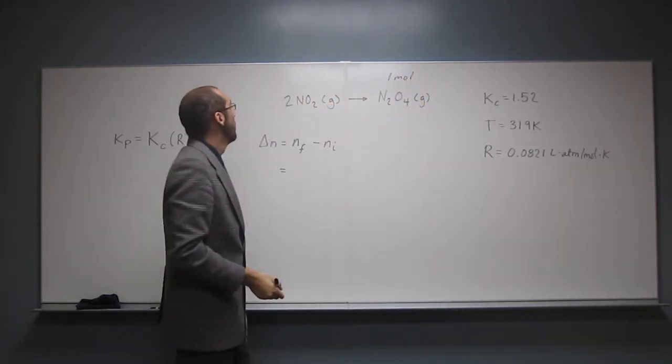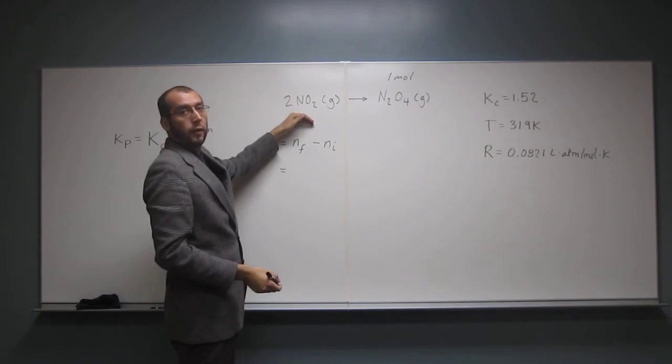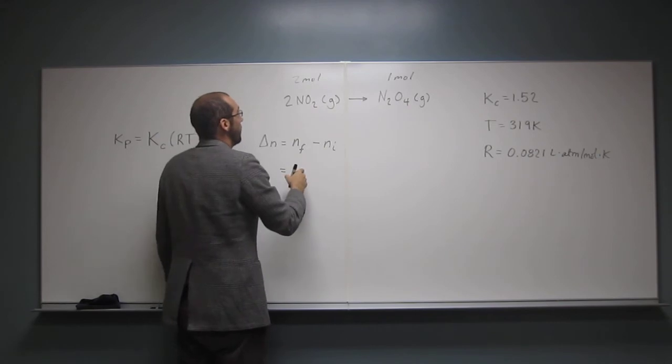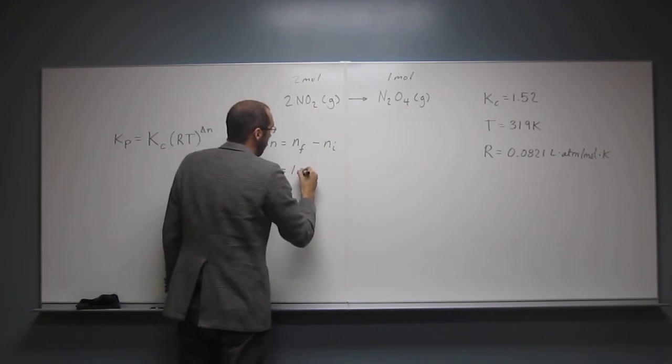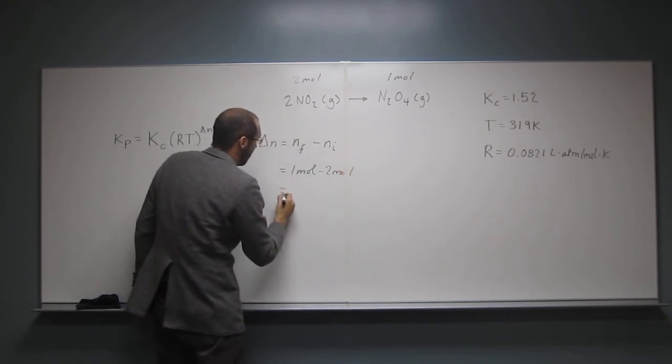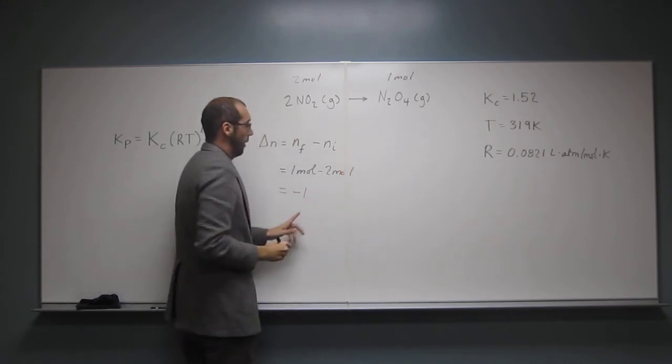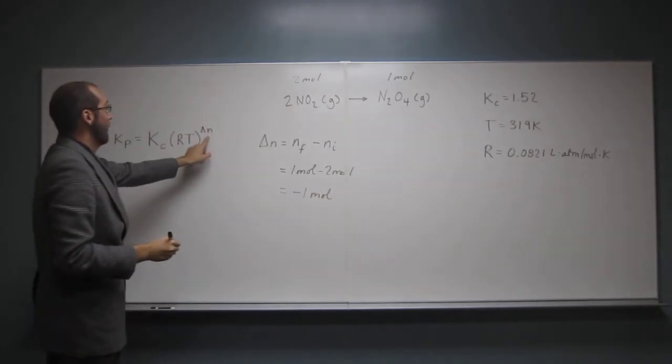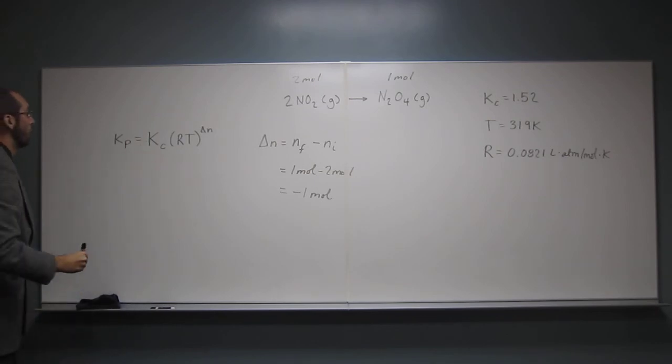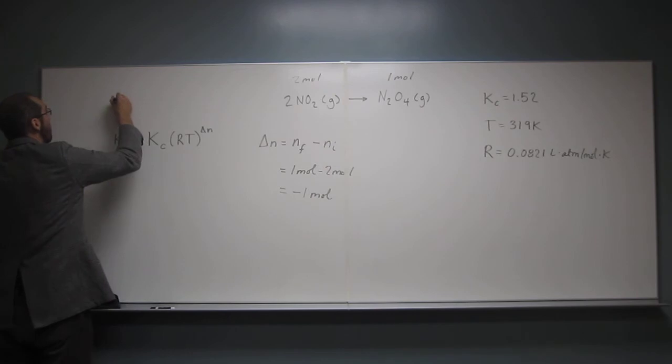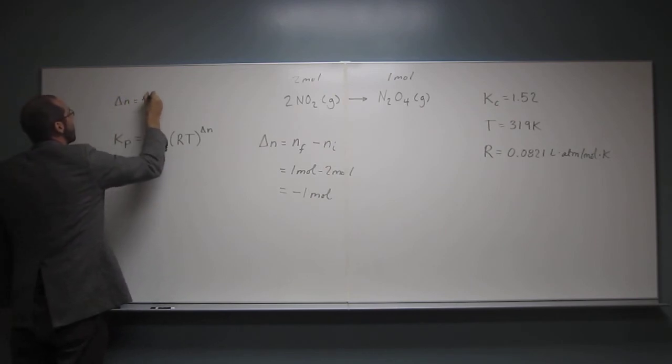So we're looking for moles of gas. How many moles of gas do we have on this side? 2, right? So 2 moles of gas. So what we're going to say is 1 mole minus 2 moles of gas, and that's going to equal negative 1 moles. We're not going to use that unit in this, but it's good to know what we're looking at. So I'm just going to put delta N equals negative 1.